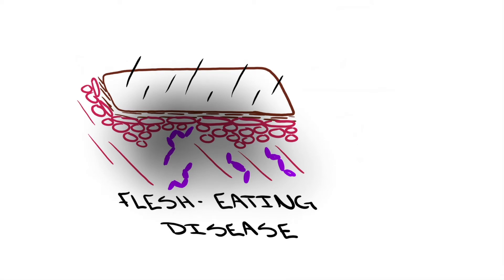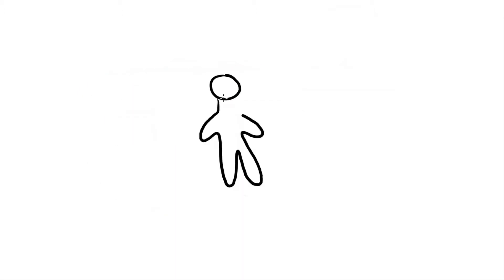Besides the general displeasure of having something called flesh-eating disease, patients also have extremely intense pain before any other signs of the infection show up. After the initial pain, flesh-eating disease is really aggressive and often needs to be treated via tissue removal or even amputation.